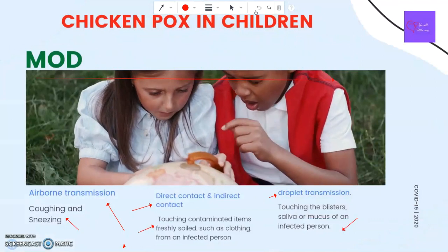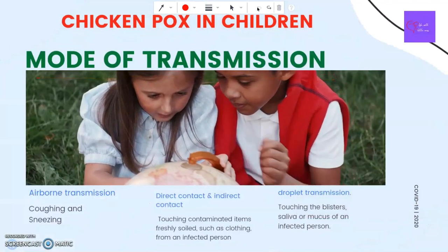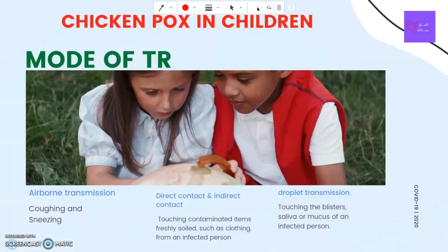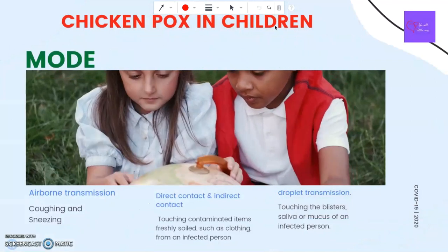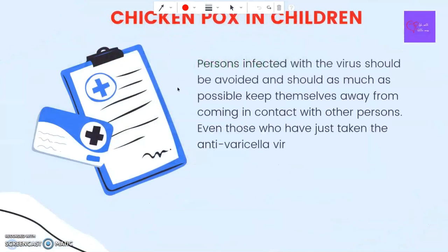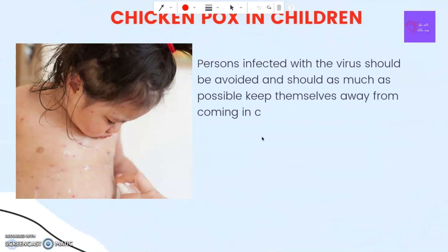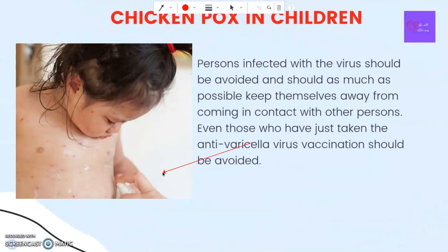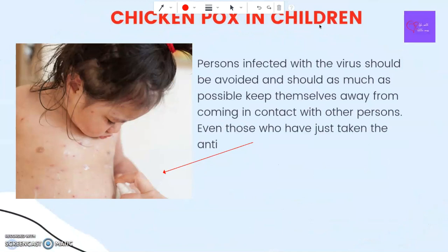Direct contact with the blisters of a person with shingles can also cause chickenpox in someone who has never had chickenpox and has not been vaccinated. Persons infected with the virus should be avoided, and as much as possible they should keep themselves away from contact with others — even those who have just received the anti-varicella vaccination should be avoided.